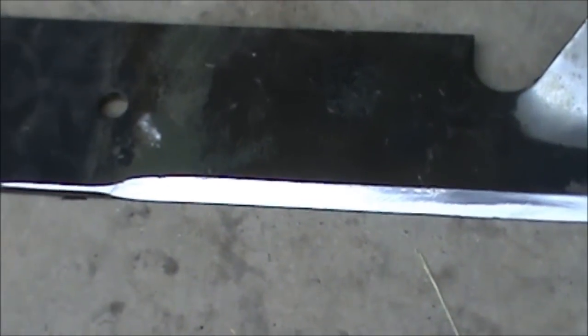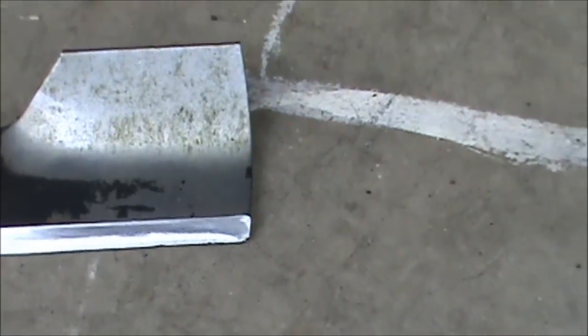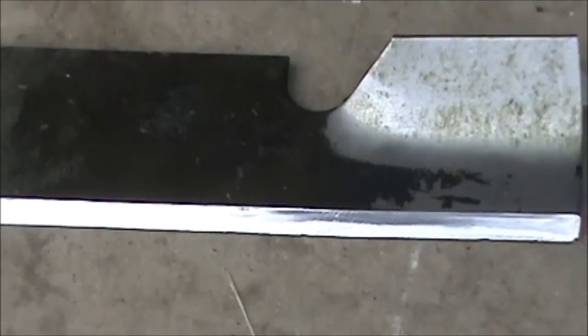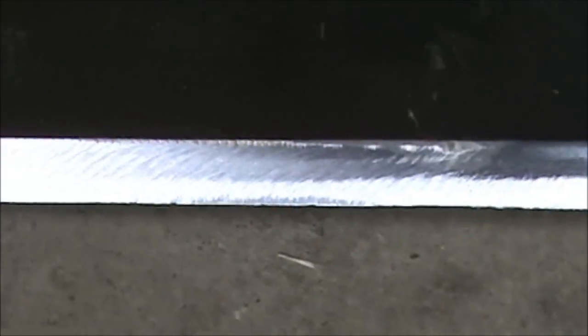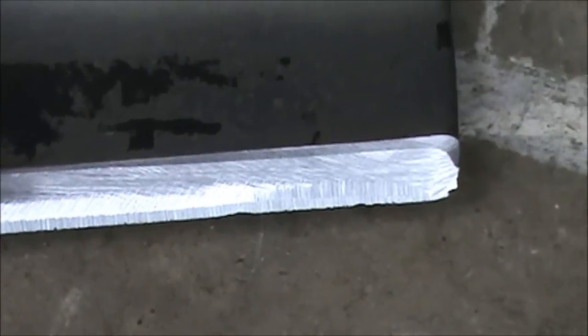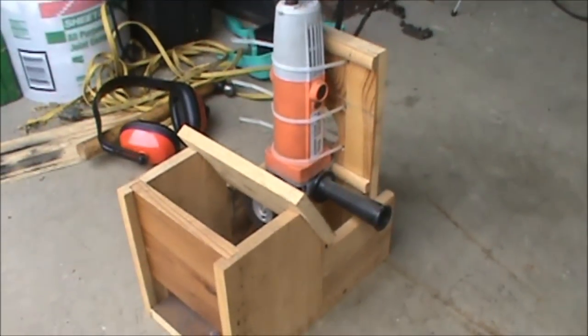pretty much gives you like a factory edge. I mean that thing's shining all the way across. I don't know if you can see it in the camera but that's a pretty nice edge. It looks like I missed a little spot on it but I'll run it back through and get it perfect. So if you want to build one of those that's another way to sharpen a blade.